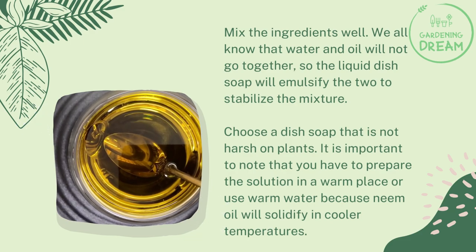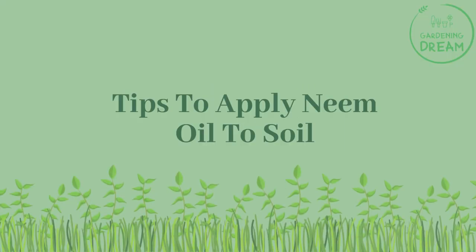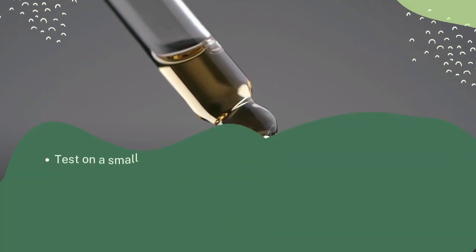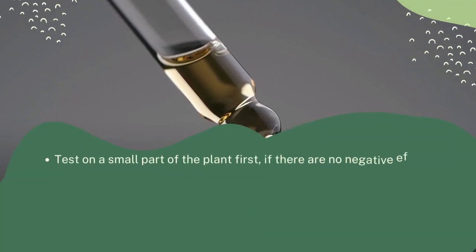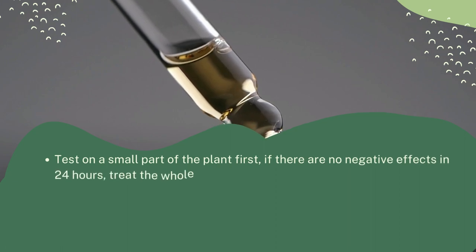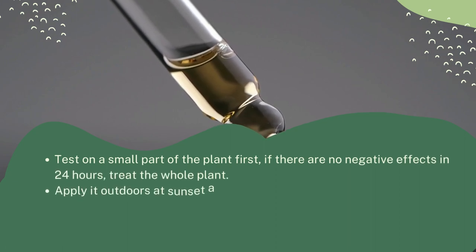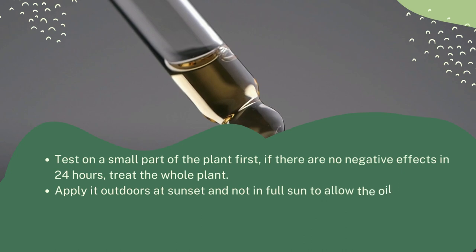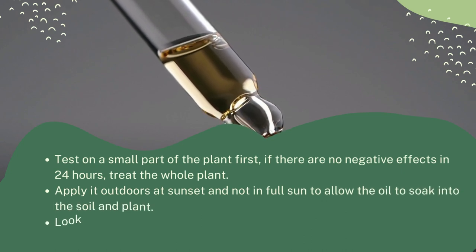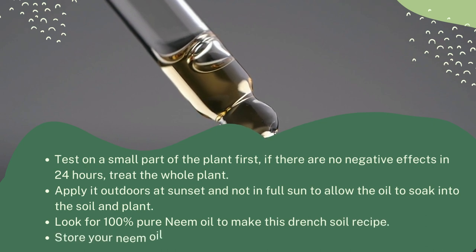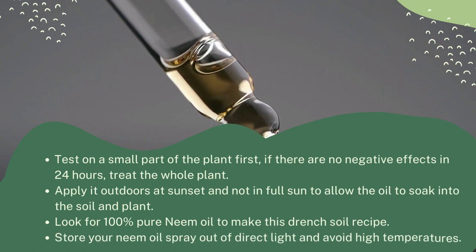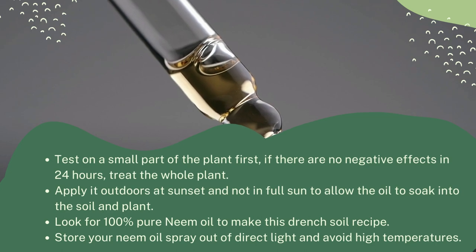It is important to note that you have to prepare the solution in a warm place or use warm water, because neem oil will solidify in cooler temperatures. Tips to apply neem oil to soil: test on a small part of the plant first — if there are no negative effects in 24 hours, treat the whole plant. Apply it outdoors at sunset and not in full sun, to allow the oil to soak into the soil and plant. Look for 100% pure neem oil, and store your neem oil spray out of direct light and away from high temperatures.